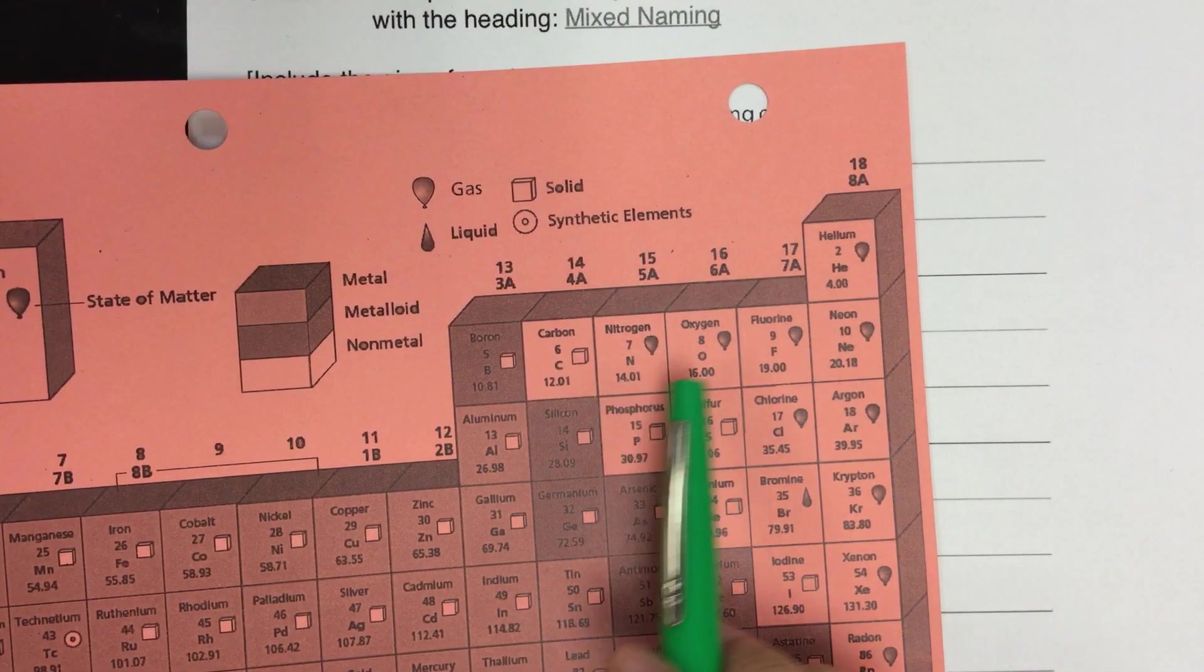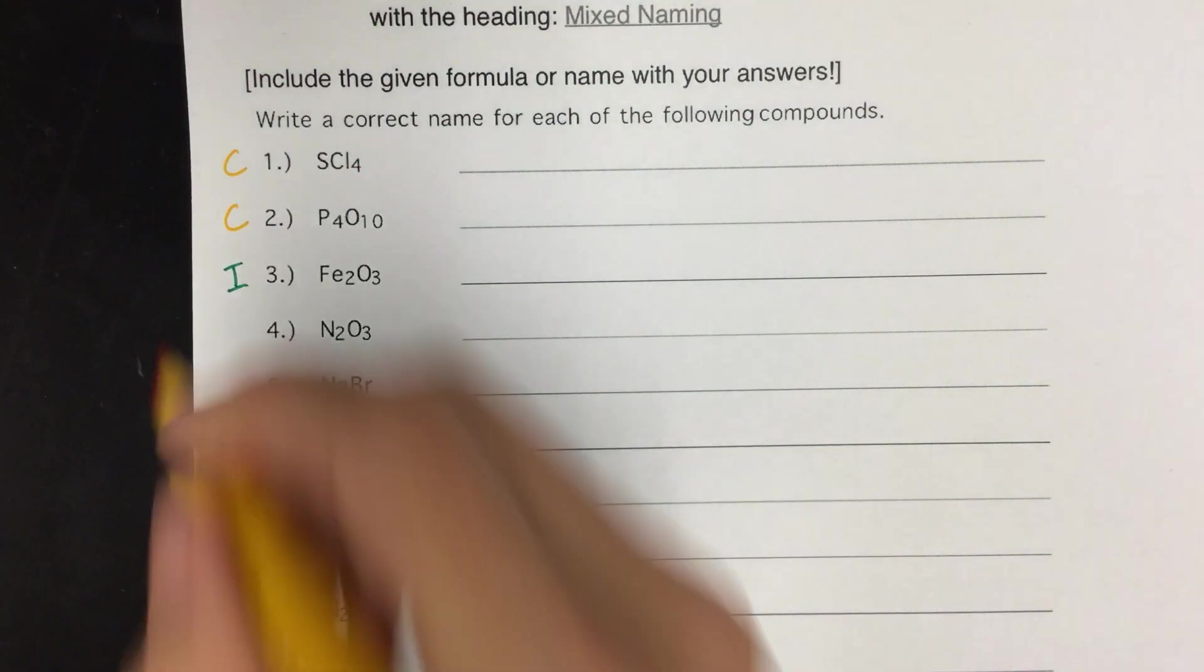Number four, we have nitrogen and oxygen. So nitrogen's here, oxygen's here, two non-metals. So this would be a covalent compound.